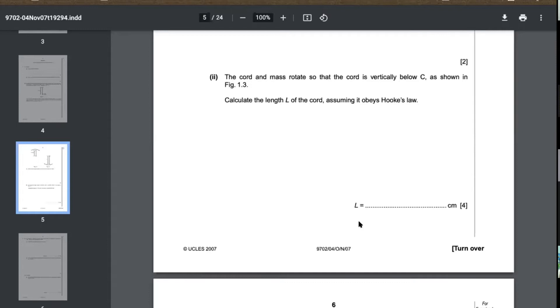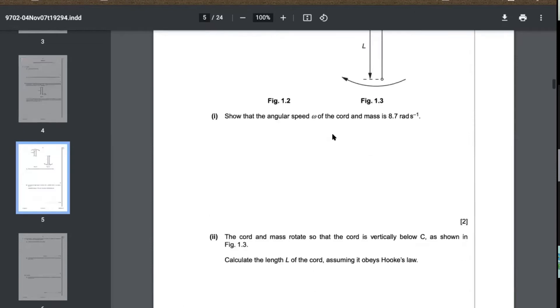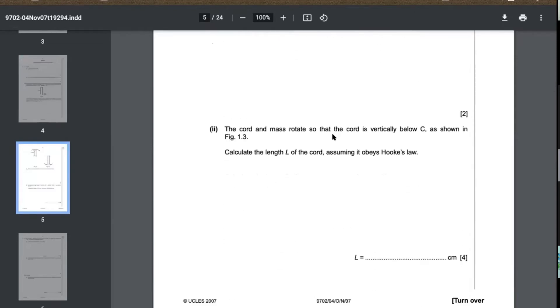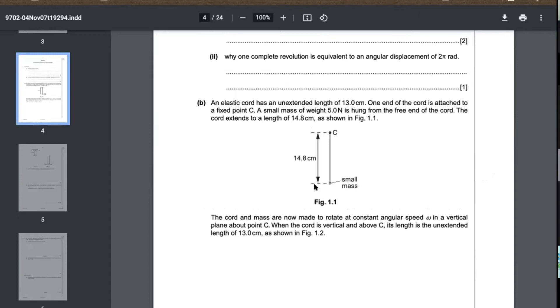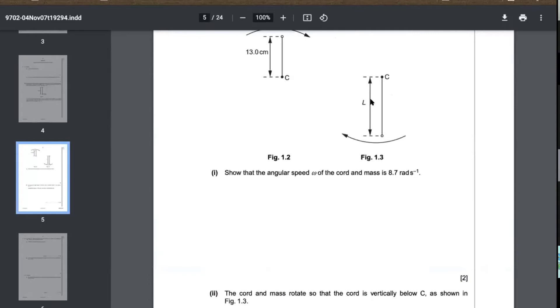First find the value of k. 1.8 centimeters extension was caused by 5 newtons, so you can calculate k. F equals kx, so kx equals... You substitute this on the tension side. The extension here is going to be L minus 13.